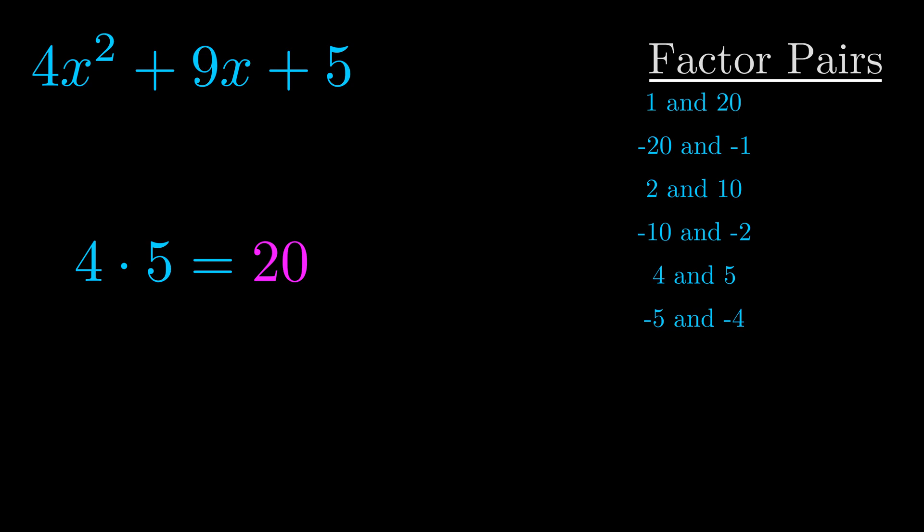The b value is the coefficient on the x term. That's the middle term, the one that we haven't done anything with yet. And really this is the only factor pair that we need.